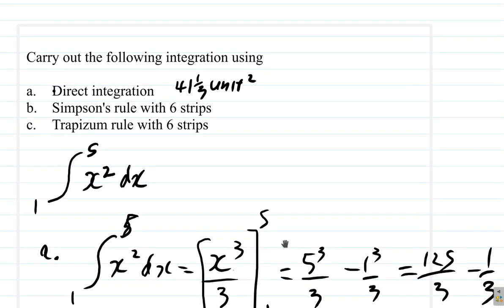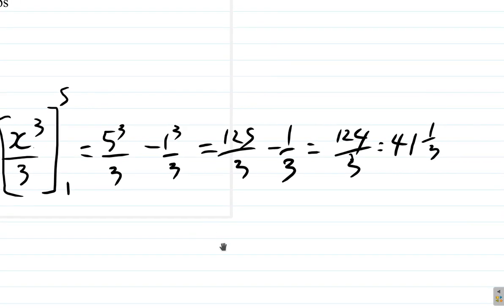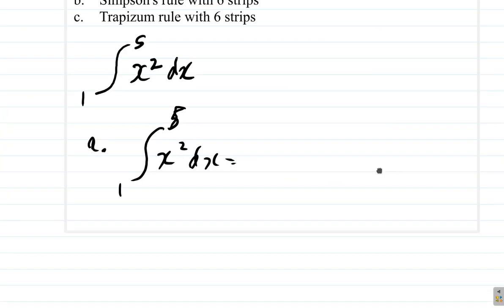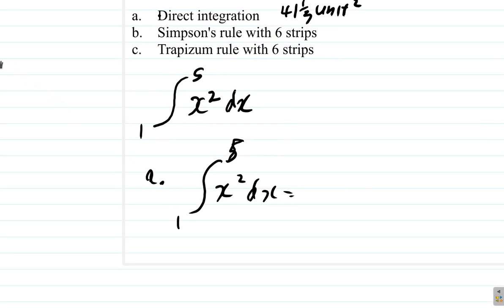Now, let's look at using Simpson's rule with 6 strips. Let's just get some of these workings out of the way, and then we go to Simpson's rule. Now, we look at our formula sheet for part B, Simpson's rule.